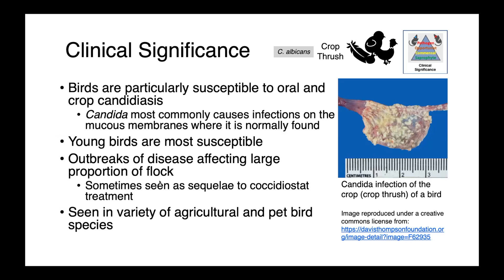We're going to start with Candida albicans and crop infections in birds. Birds are particularly susceptible to oral and crop candidiasis. Candida most commonly causes infections on the mucous membranes where it's normally found. Young birds are most susceptible, and we can see outbreaks affecting large proportions of the flock following some intervention — perhaps as a sequela to coccidiostat treatment. Drugs given to control a parasite may impact the normal microbial communities on the mucous membranes, providing an ecological niche for Candida to thrive. These infections can be seen in both agricultural and pet bird species, with characteristic white proliferative lesions visible on the mucosal surface.